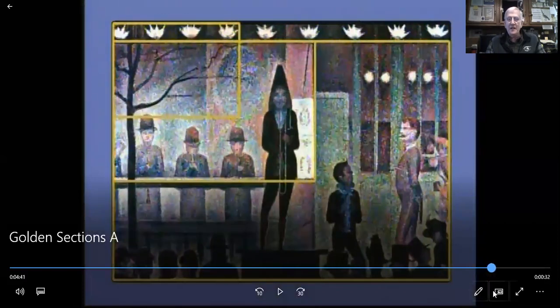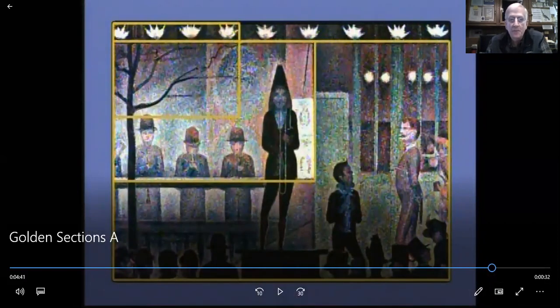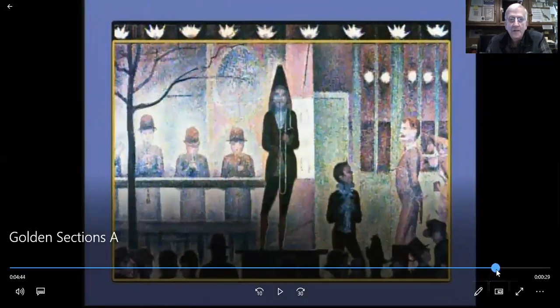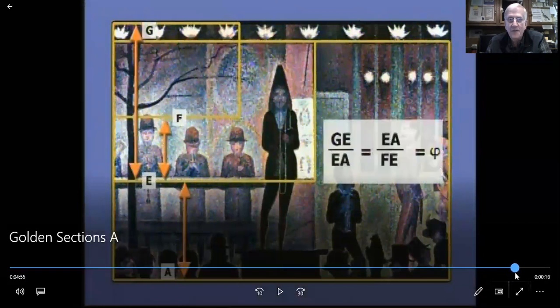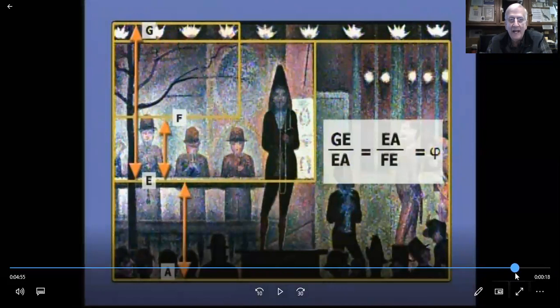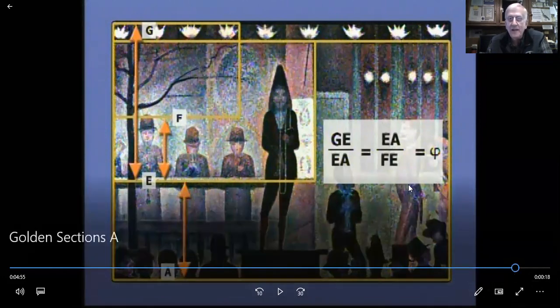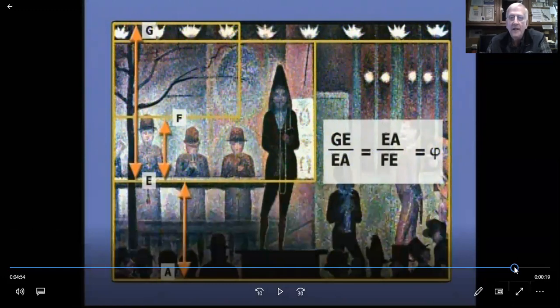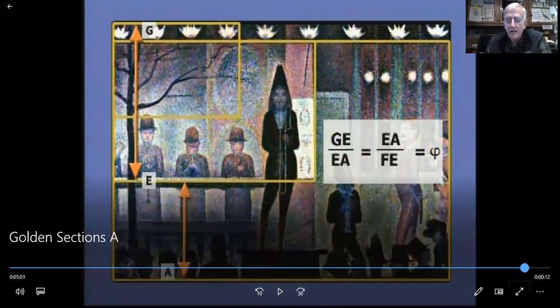Now Ed at the end of the movie talked about this particular painting and he showed that some of the segments divided to give you phi. For example, GE divided by FE, or EA, gives you phi, and just like EA divided by FE also gives you phi. These are all examples of artwork and things that people have done that involve the golden ratio and golden sections.